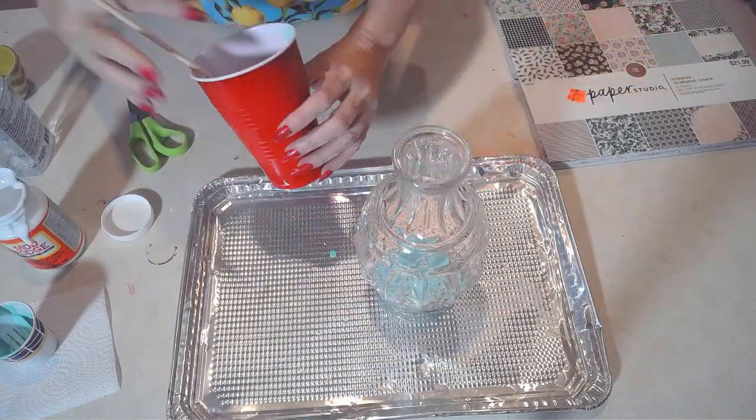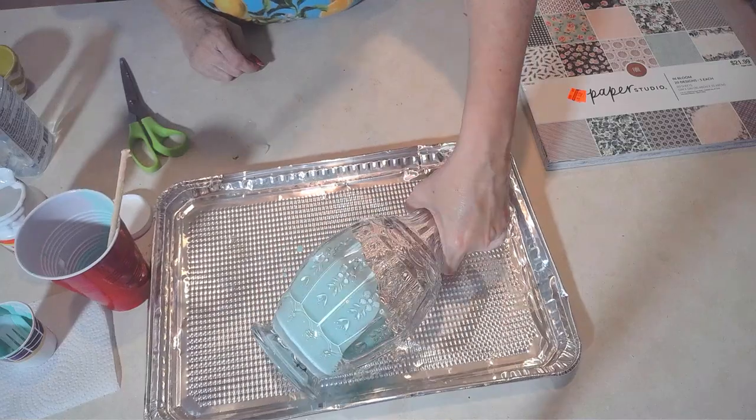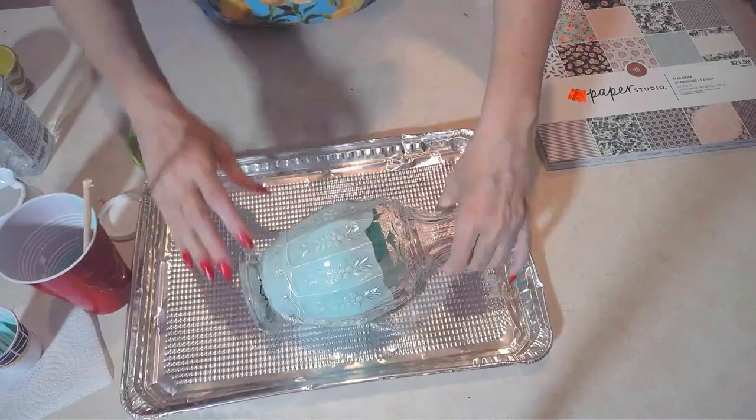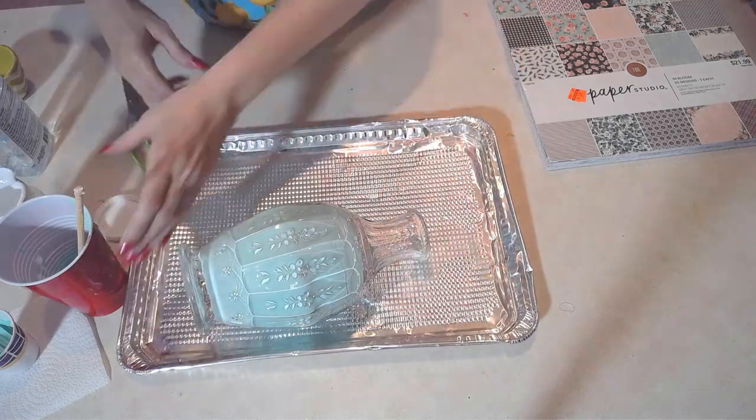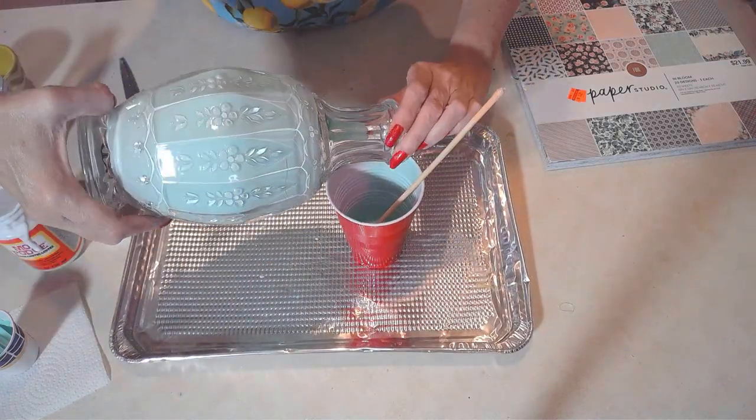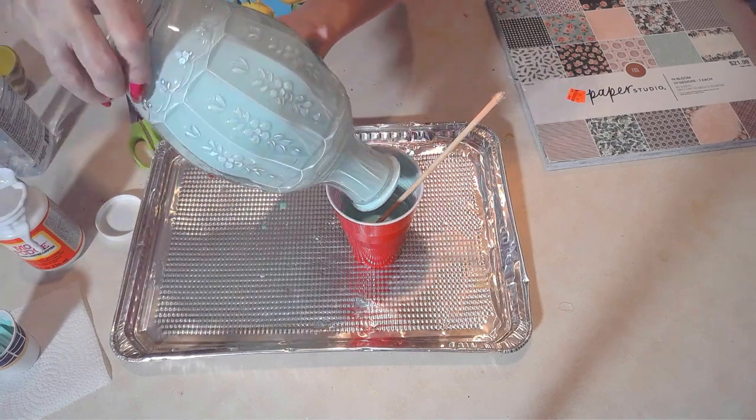And why did I mix it with Mod Podge you might ask? Well, I'll tell you - because I'm going to paint the inside of my glass and I didn't want the paint to just slide off. Yes, I wanted it to be glossy and shiny and pretty and that's why I'm using that gloss Mod Podge. And I will now dump all of that beautiful paint into that beautiful bottle.